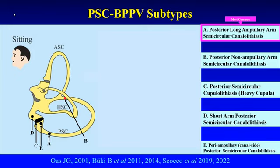Third is posterior semicircular cupulolithiasis or the graviceptive heavy cupula. Fourth is short-term posterior semicircular canalolithiasis. Fifth is peri-ampullary canal site posterior semicircular canalolithiasis, which is often associated with a constriction in the peri-ampullary region of the posterior semicircular canal.